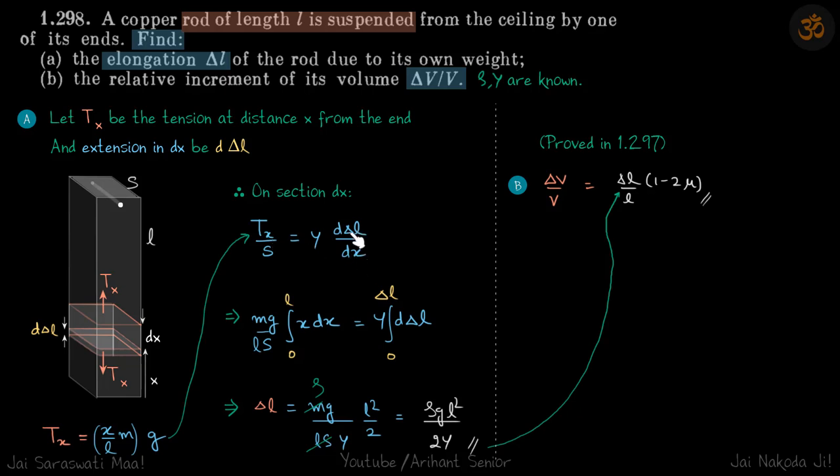By integration, x varies from 0 to L, and delta L varies from 0 to delta L. You might have understood why we have taken x from the bottom - it makes our calculations a little bit easier. Otherwise, if you take from the top, instead of x you will have to write L minus x for the mass.